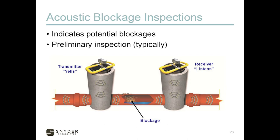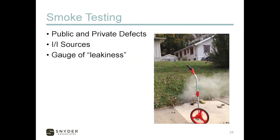Acoustic inspection is a relatively new technology. It uses sound waves to indicate potential blockages or issues. Its best application is for preliminary inspection — when you have a large quantity of sewers that need to be looked at but not enough financial resources to do them all, it's a more cost-effective way to identify sewers that need closer inspection. Smoke testing can identify public and private defects, illicit connections, and I&I sources. It's not foolproof, but when you see smoke, you know there's a connection and an issue.